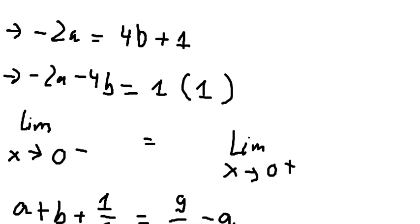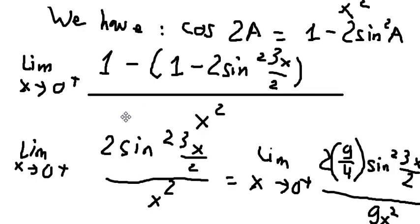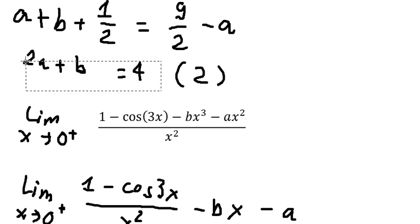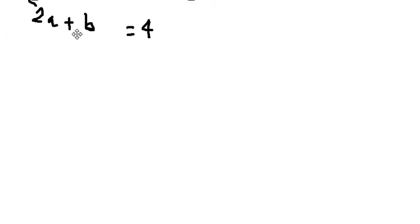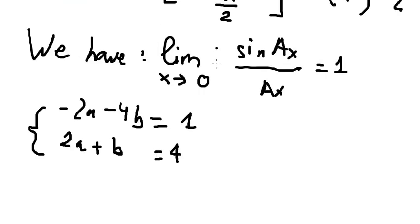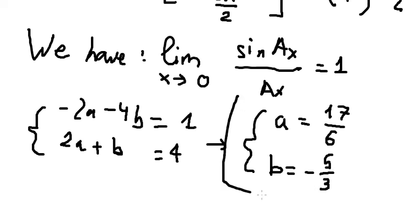We substitute equation 1 into equation 2 and solve. After calculating, we get the final answer: a equals 17 over 6, and b equals negative 5 over 3.